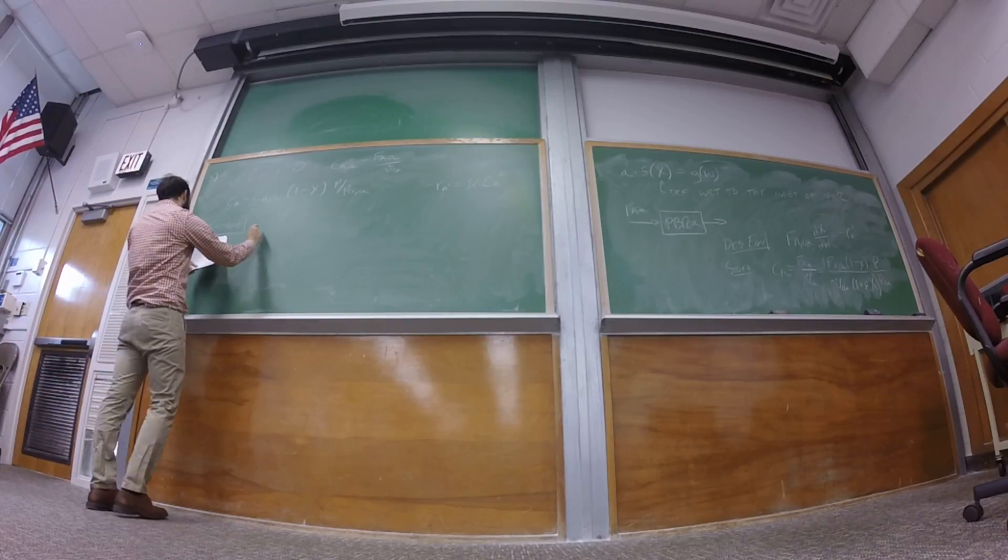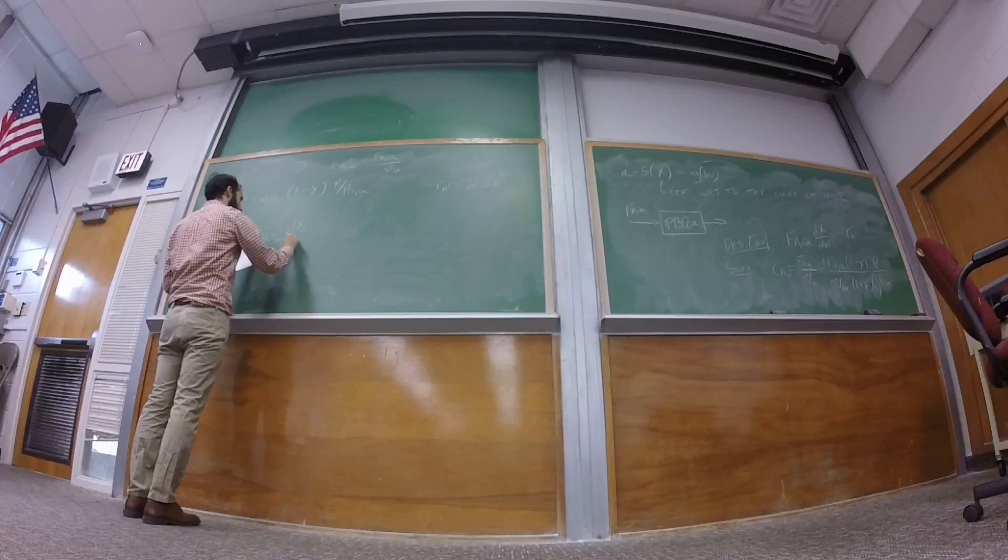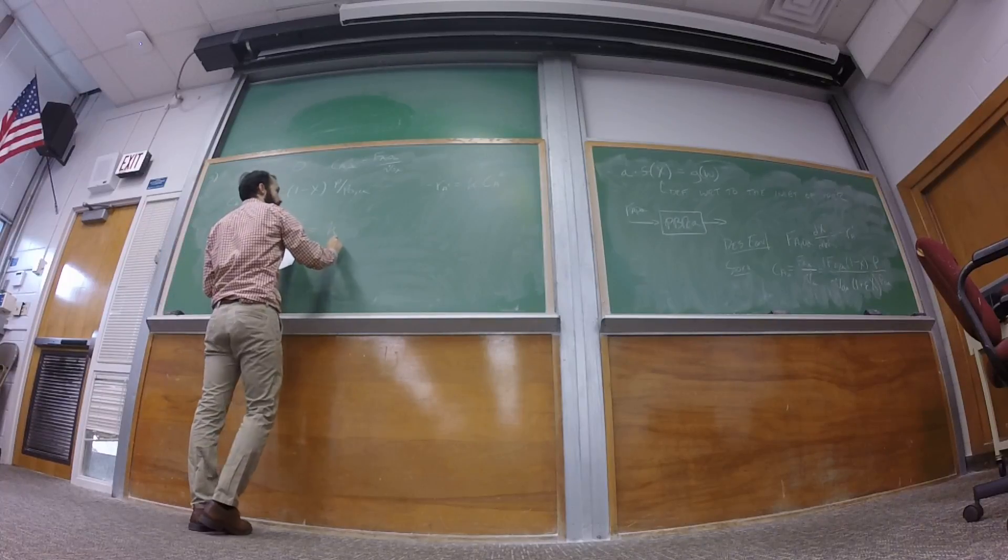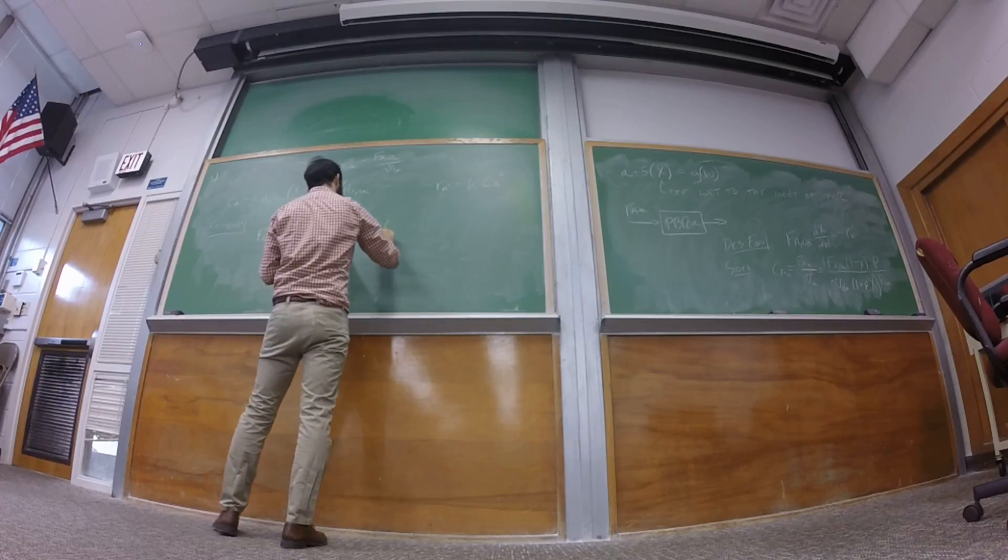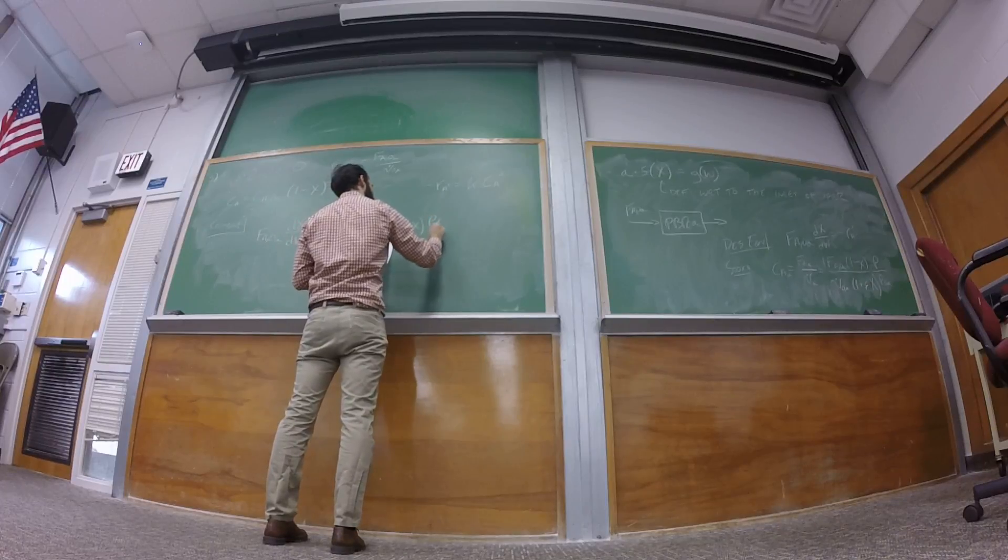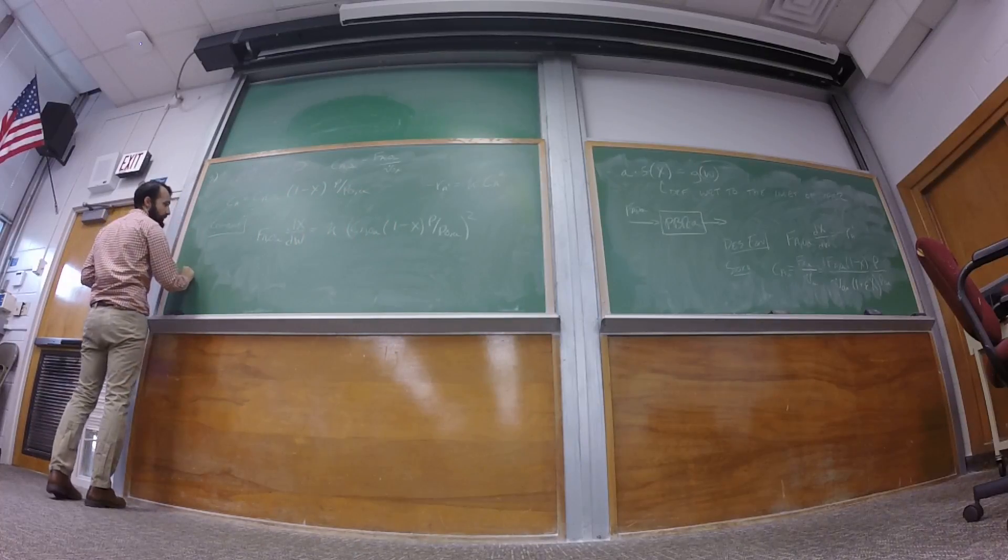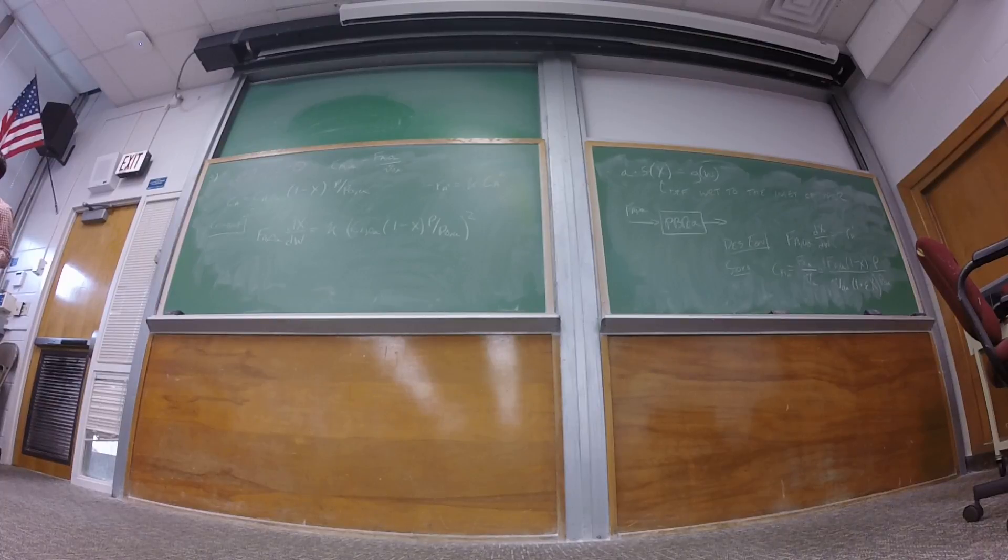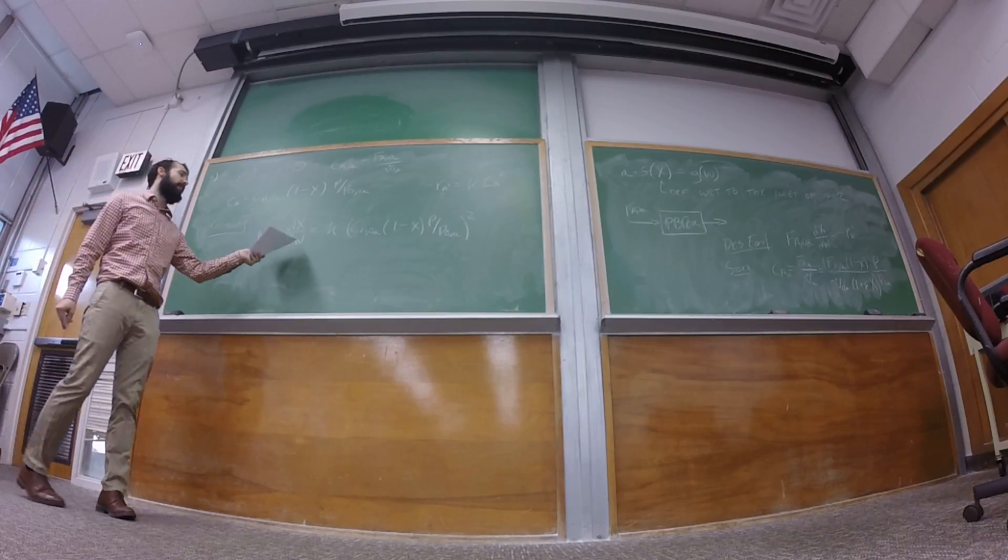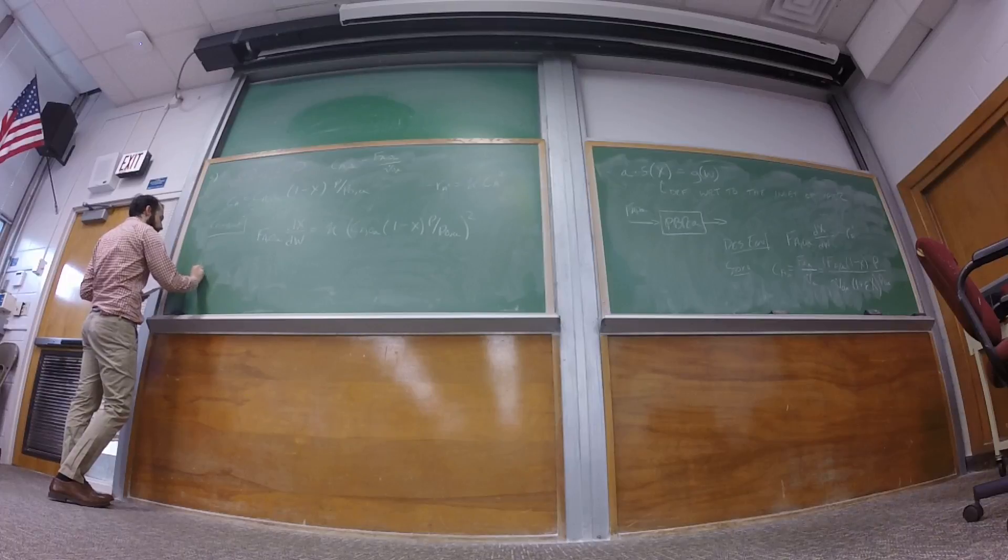Okay, so then we combine and we get F A naught A times dx/dw is equal to K times this stuff squared. All right, can we stop there? No. Right, because the pressure is still there and we need to get rid of that pressure term so that we have it as a function of catalyst weight. All right, so we also need the pressure drop equation.